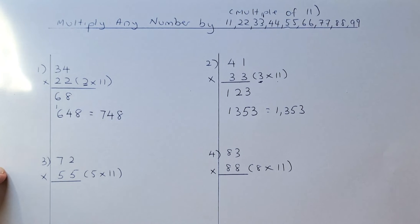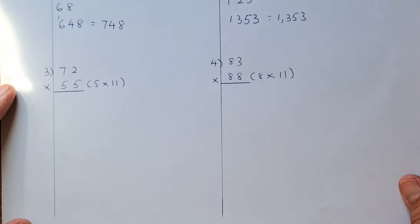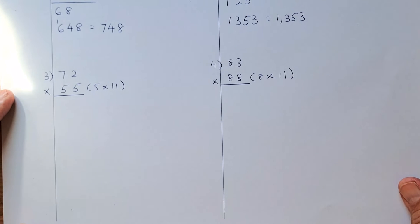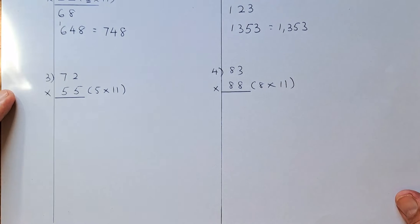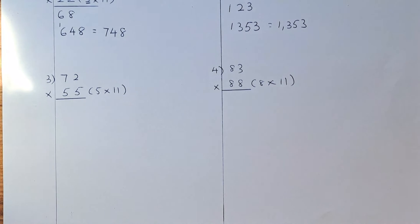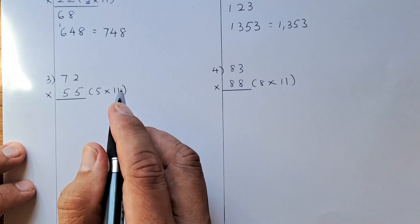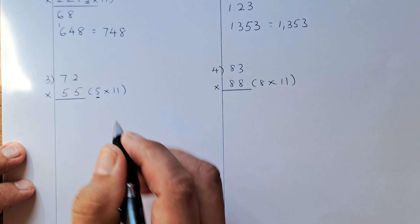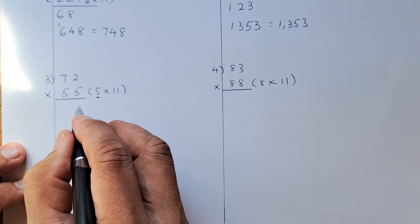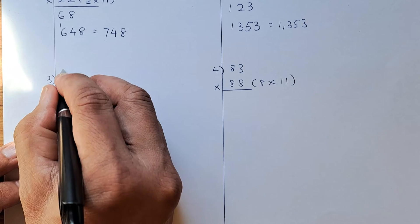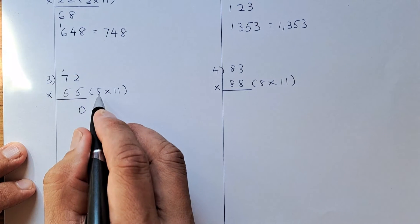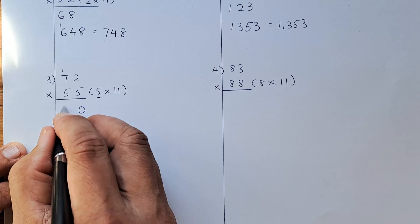And now we shall proceed to two more examples with bigger numbers now. So we are now looking at 72 multiplied by 55. Again, 55 is made up of 5 times 11. So we are going to multiply by 5. So what we do, we take 72 times 5 is 10. 0 carry up 1. And then 7 times 5 is 35 plus 1 is 36.